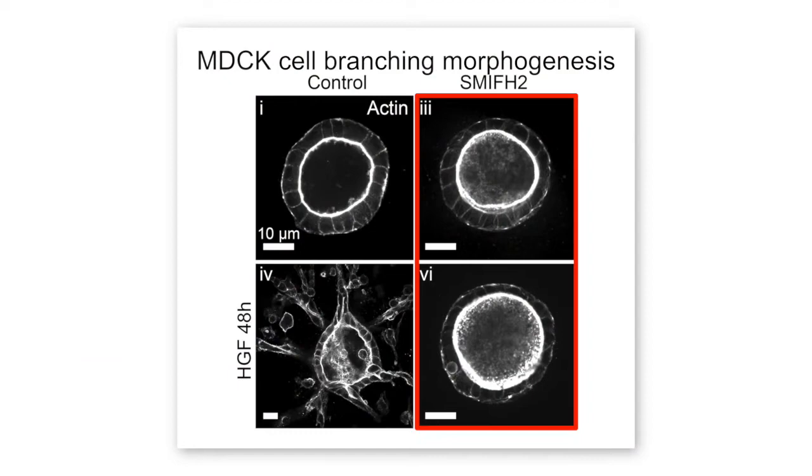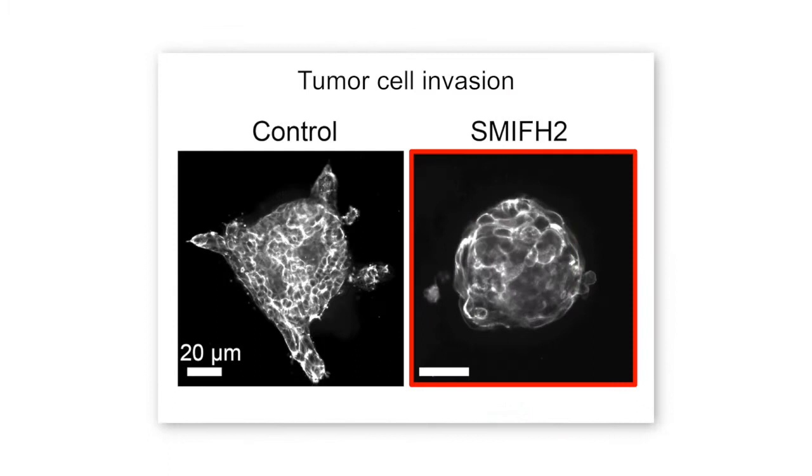Tim was interested in this as a cancer biology student and started putting in pharmacological inhibitors of actin assembly factors on different assays for both tumor growth and branching morphogenesis. The most striking initial result was that when he put a broad-spectrum formin inhibitor on asini of MDCK cells — hollow spheroids — and also tumor masses excised from mouse,